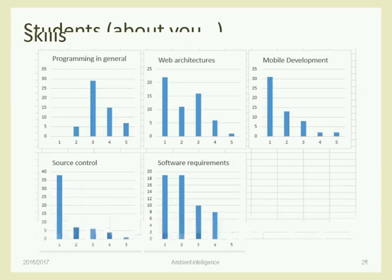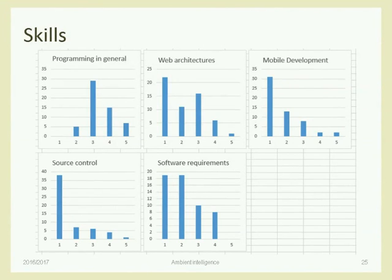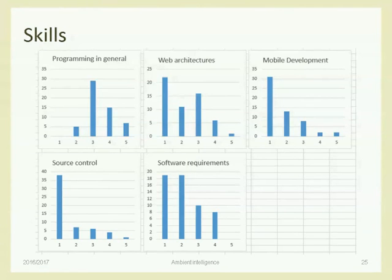Another question was your self-evaluation of different skills. Programming in general scored three and four — you feel quite confident. About specific technologies: web architecture is split between nothing and some knowledge, and all the rest is mainly rated one. So most of you haven't touched these topics in your studies. But we will cover source control and software requirements, which are a strong part of the course.